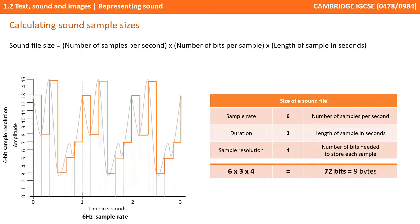So if we take the example of the graph shown on the left, we have a sample rate of 6 hertz — this analogue waveform is being recorded 6 times a second. We have a duration of 3 seconds and a sample resolution of 4 bits, meaning every time we're sampling the sound it's storing 4 bits of information. 6 times 3 times 4 is 72 bits, and if we divide that by 8 we have 9 bytes.